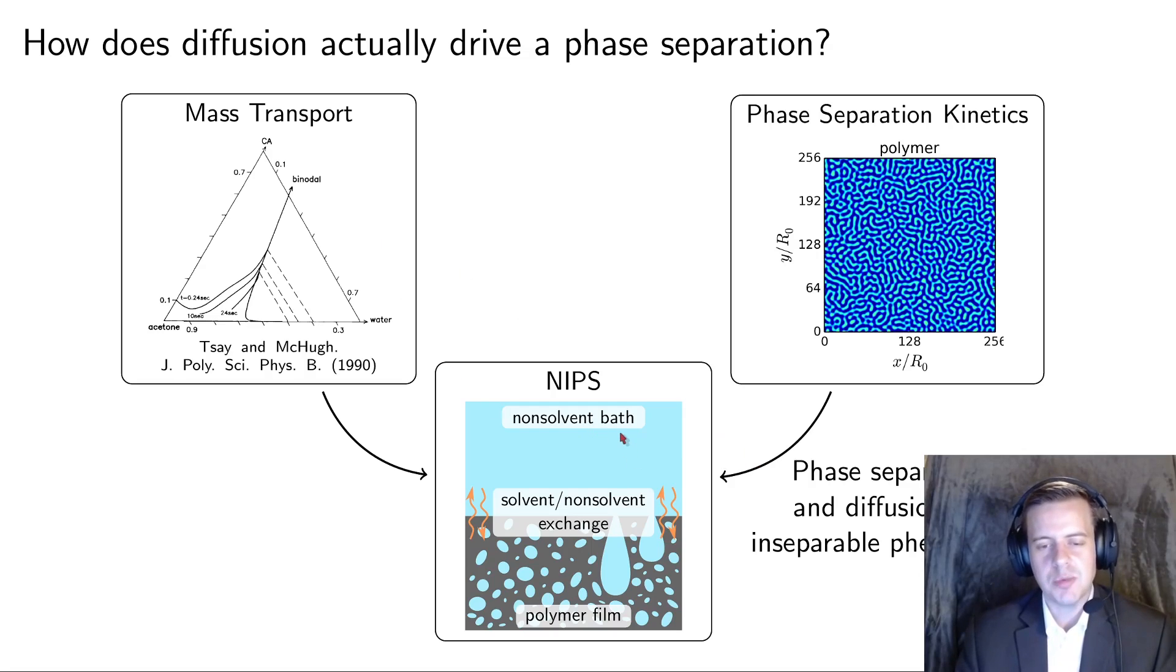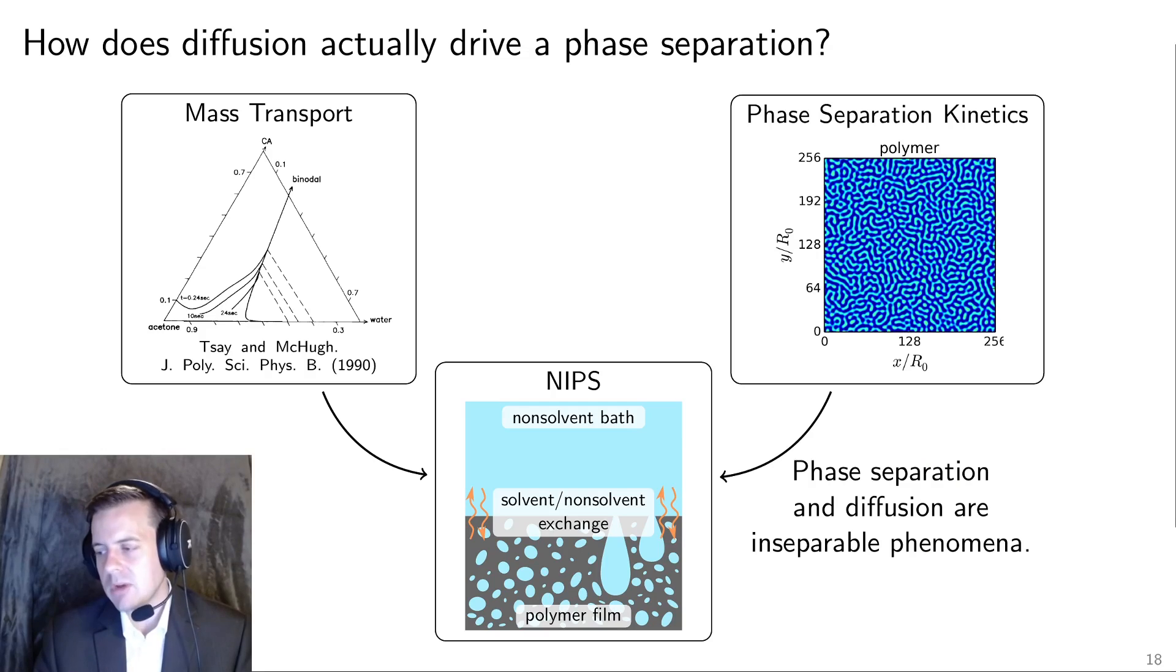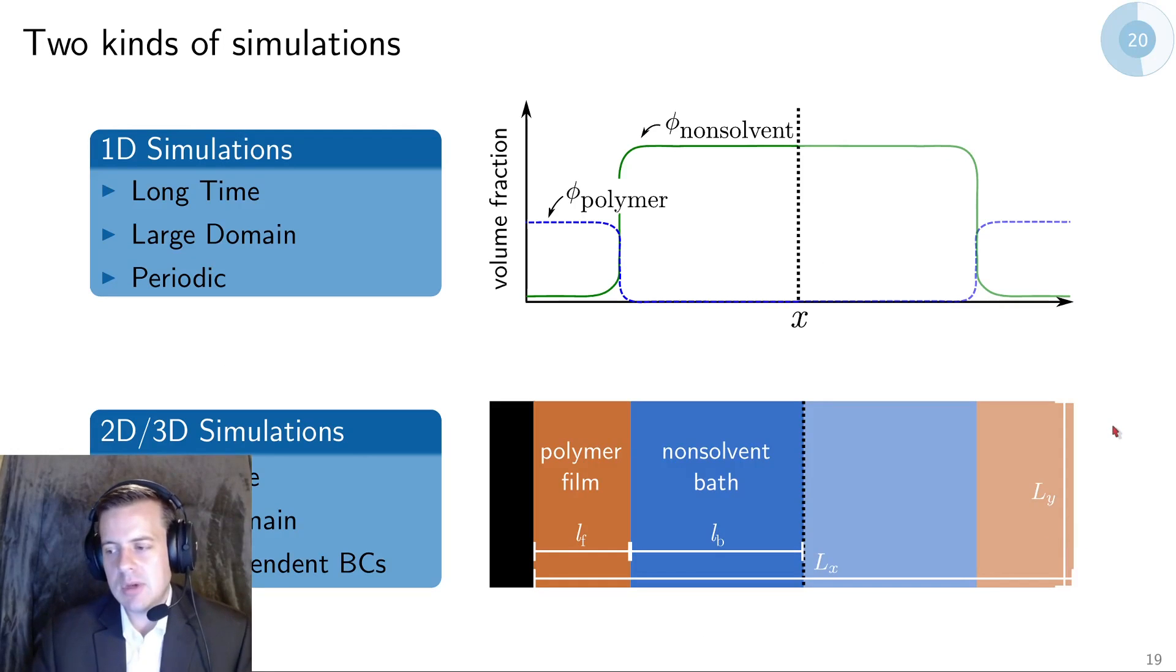In non-solvent induced phase separation, you have a non-solvent bath that's driving the phase separation. In the literature, there's been quite a bit of interest in the mass transport. Chemical engineers like to look at mass transfer. And there's also been a lot of work on spinal decomposition kinetics and what happens in phase separations. But it turns out that phase separation and diffusion are inseparable. So you can't have diffusion without it driving a phase separation as well. There's this interesting coupling between diffusion that's driving the phase separation from a bulk standpoint where this exchange is happening and diffusion is also causing a phase separation at the local micro level.